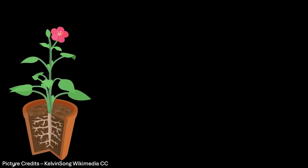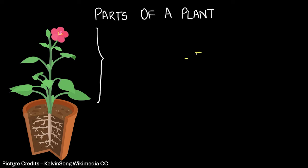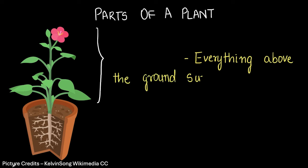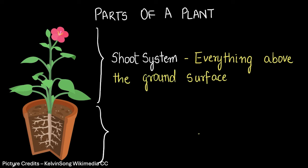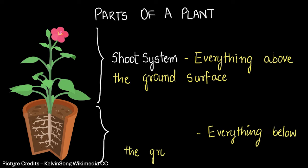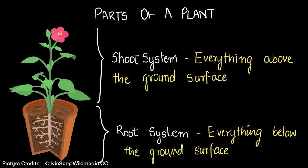In this video we'll talk about plants. We'll start with discussing the parts of a plant and then we'll move on to the classification of plants into different types. Let's begin with the parts of a plant. Everything above the ground that you see is called the shoot system, and everything below the ground is called the root system.